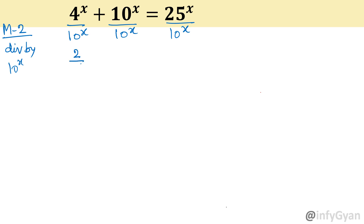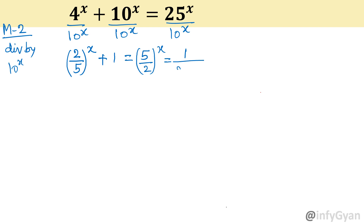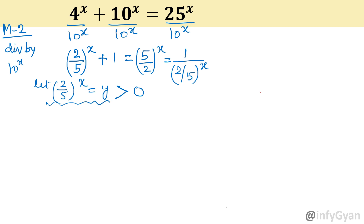By applying the same two properties from Method 1, I am writing (2 over 5) whole power x plus 1 equal to (5 over 2) whole power x. Now (25 over 10) is 5 over 2, and (4 over 10) is 2 over 5. This (5 over 2) whole power x can be written as 1 over (2 over 5) whole power x. Now substitute (2 over 5) whole power x equal to y — and remember, it should always be positive.